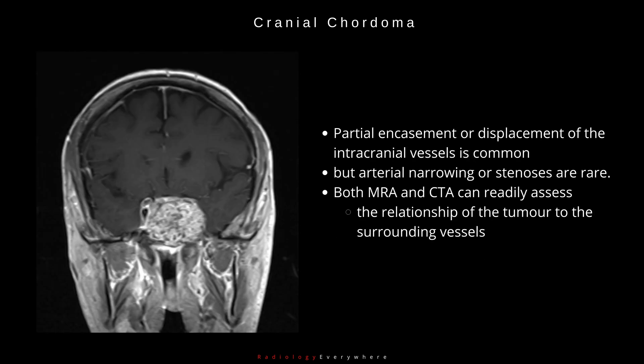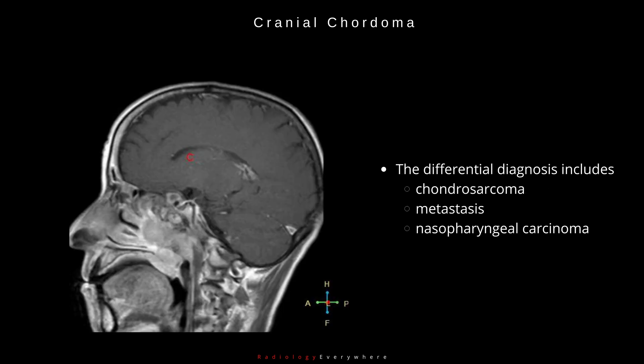Partial encasement or displacement of the intracranial vessels is common, but arterial narrowing or stenosis are rare. MRI and CTA can be used to show the relationship of the tumor to the surrounding vessels. The differential diagnosis includes chondrosarcoma, metastasis, and nasopharyngeal carcinoma.